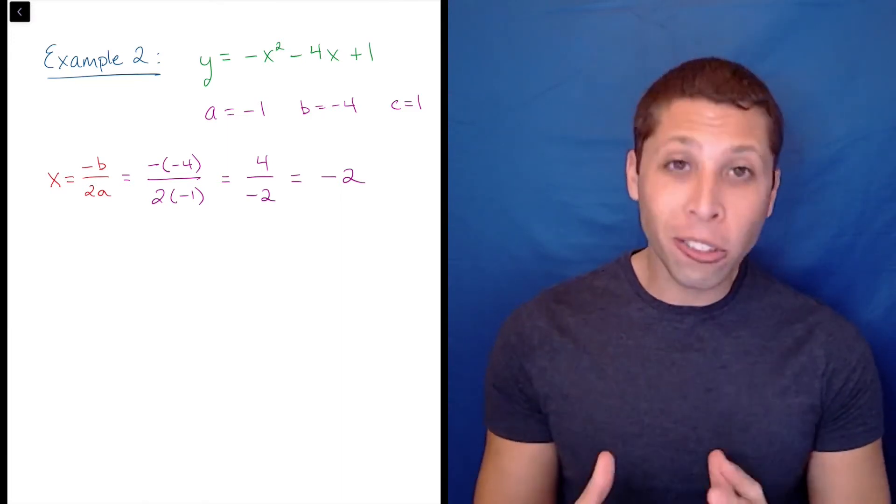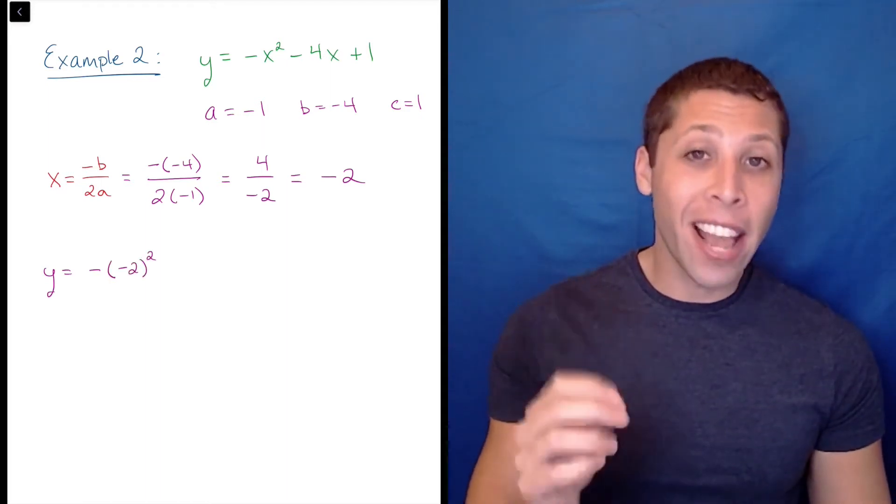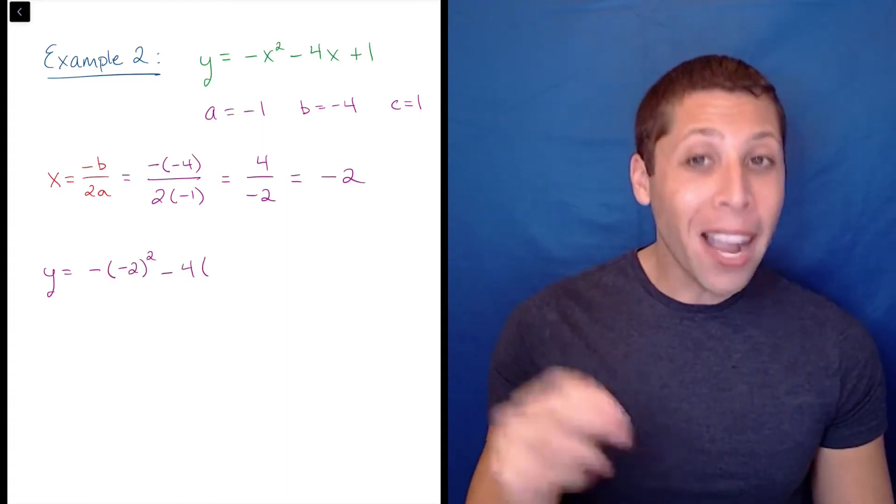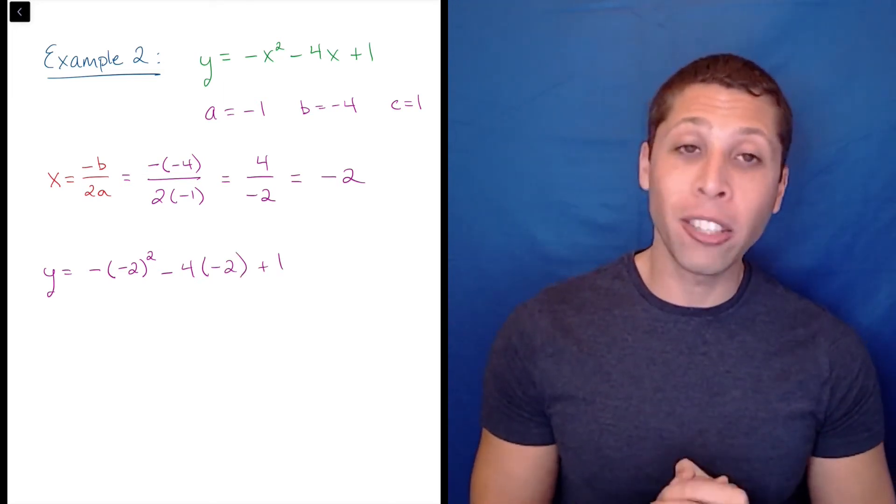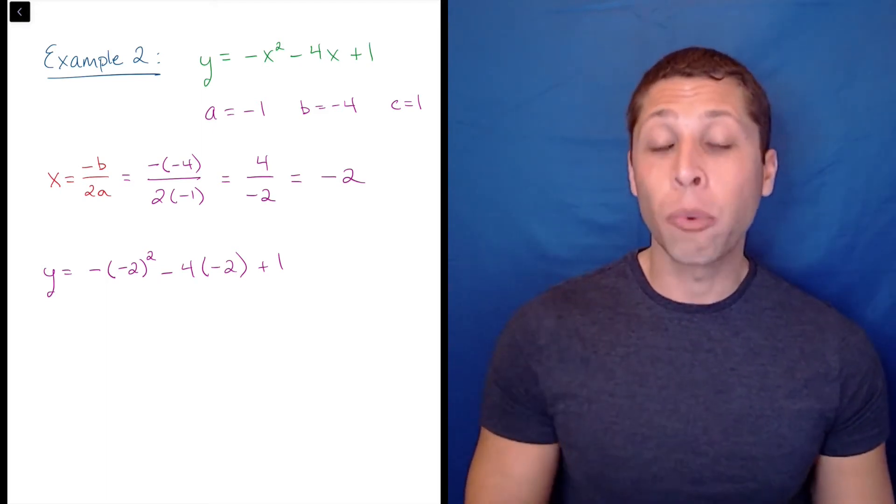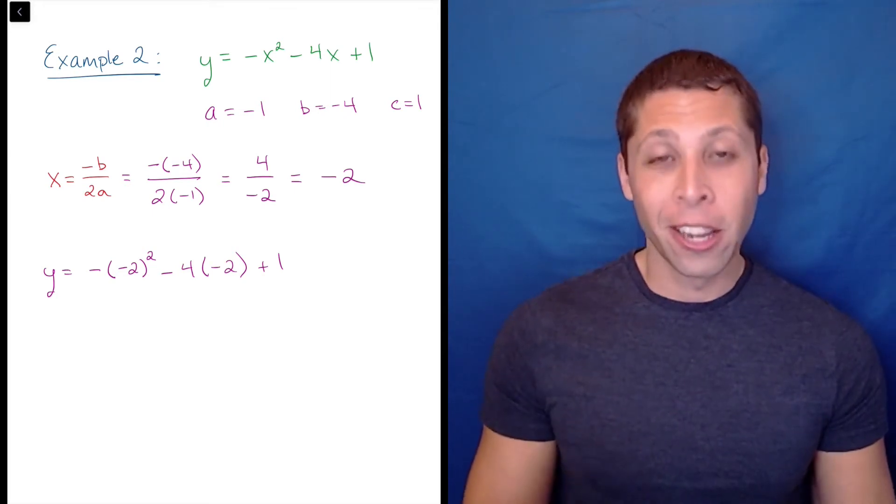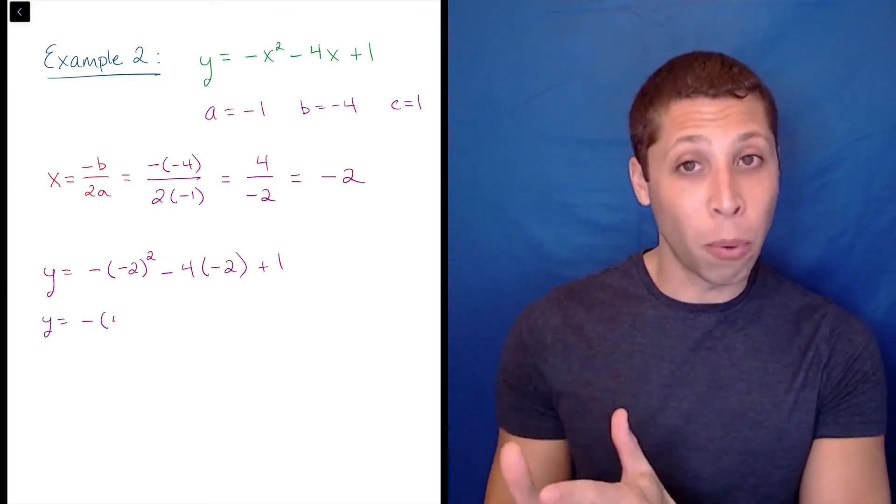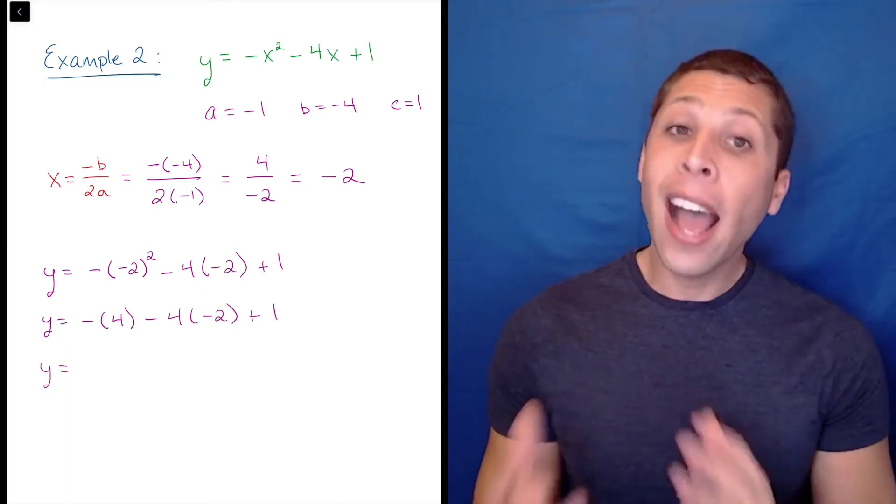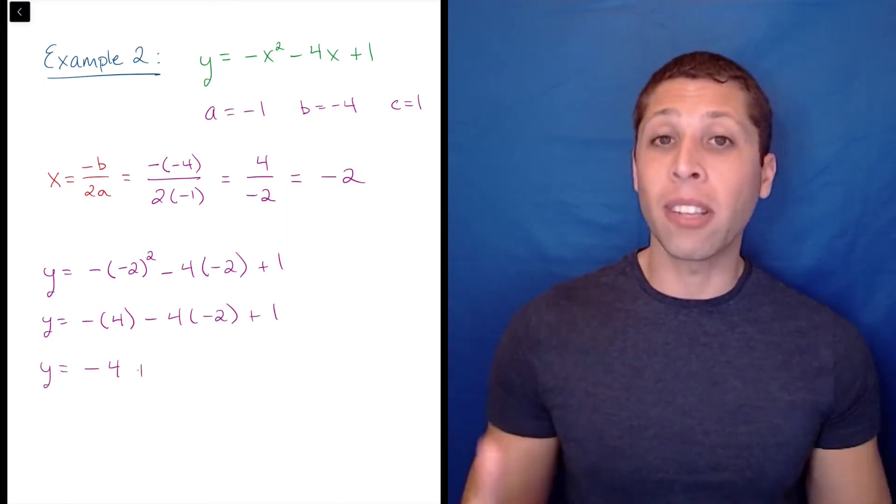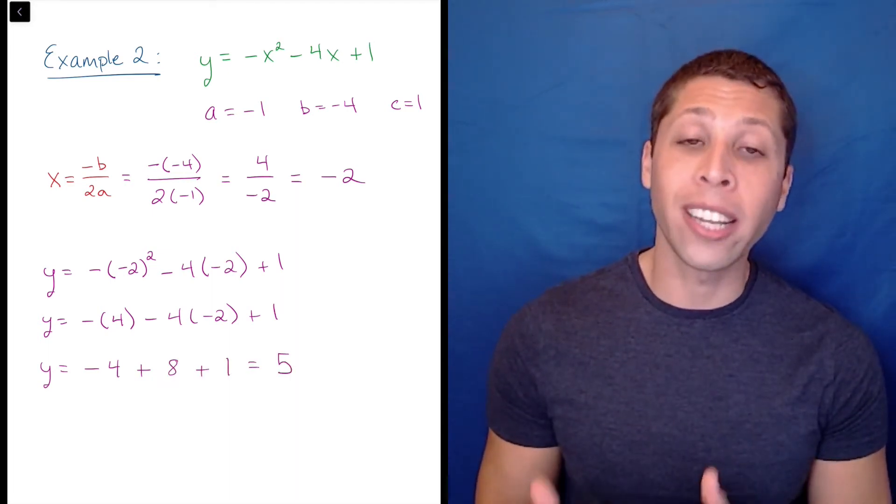You should also use parentheses when you substitute into the equation: negative negative 2 squared minus 4 times negative 2 plus 1. Following the order of operations, simplify the exponents first, which means we'd square the negative 2, not the negative that's out front. We should have negative 4 minus 4 times negative 2 plus 1. Now you can do the multiplication, which gives us negative 4 plus 8 plus 1. Add them all up to get that the y coordinate is 5, so the vertex is the point negative 2, 5.